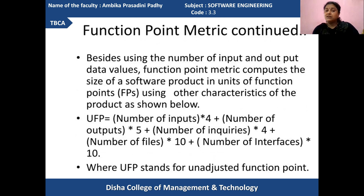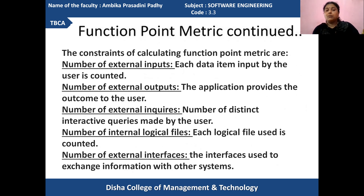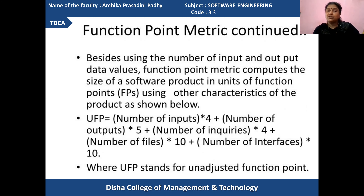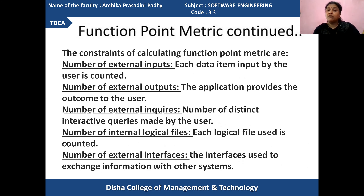According to that, a calculation is made to identify the unadjusted function point (UFP). Then further the unadjusted function point is refined by these factors — according to the imports, outputs, inquiry, number of files required, and number of interfaces required — basing upon the quality of the information. If the quality of information is simple, then the result will be different. If it is of average type, then the result will be different. If it is of complex nature, then the result will be different.